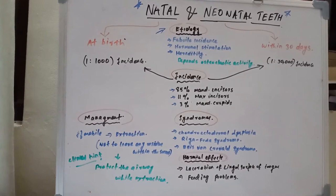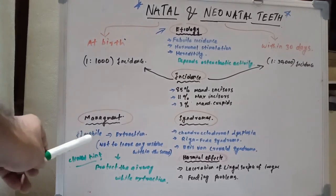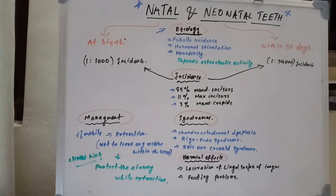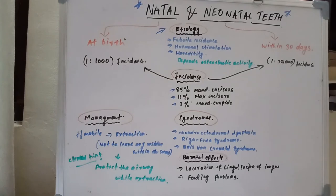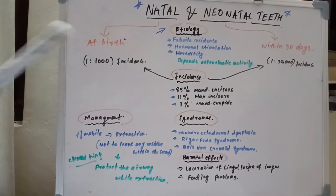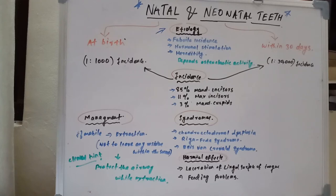For management, we first need to take a radiograph to determine whether the tooth has a root or not, and perform a very careful extraction if the tooth is very mobile. While doing the extraction, we must ensure that no residue is left within the socket, because residue may start creating tissue and form tooth-like structures within the socket, again creating problems for the baby and mother.